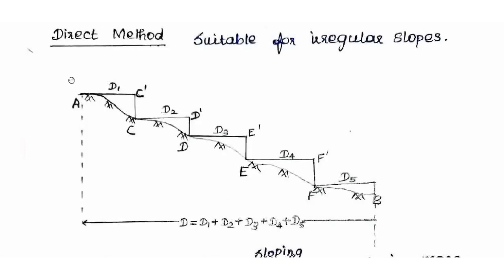A to B cannot be measured as a single distance directly. The follower holds the back end of the chain while the leader proceeds. At a certain point, the leader holds the chain horizontally and the distance is measured. A ranging rod is used to align the C point, and once C is fixed, the distance D1 is measured. You then repeat the same procedure.